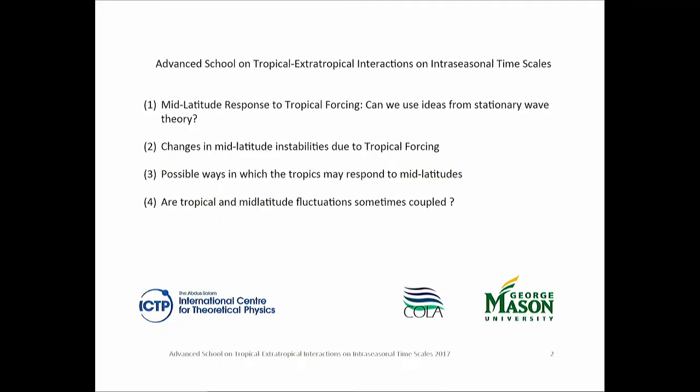The first one is: some of the language we use when we're talking about how the extratropics respond to the tropics is actually almost subconsciously based in theories of stationary wave theory. What I mean by stationary wave theory is: if you have an anomalous source in the tropics which is stationary — it just sits there — there'll be a stationary response, a time-independent response, in the latitudes. That's been very well studied and is relevant on longer timescales. Some of those concepts are used even when we're describing intraseasonal, shorter-term responses of the extratropics to tropical forcing. So it's good to know and to ask ourselves: can we use some of these ideas of stationary wave theory?